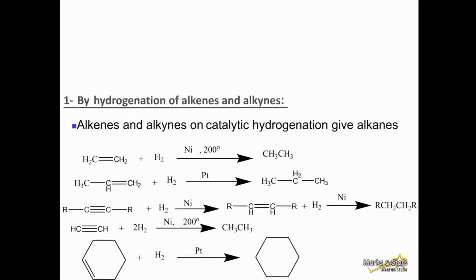The first method is by hydrogenation of alkenes and alkynes. Alkenes and alkynes on catalytic hydrogenation give alkanes. If you reduce alkenes in the presence of a catalyst at high temperature, you will get alkanes. You are essentially converting a pi bond into a sigma bond. Alkenes are unsaturated hydrocarbons, so you are removing their degree of unsaturation by doing catalytic reduction and adding one sigma bond.